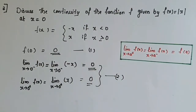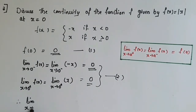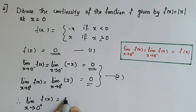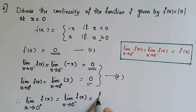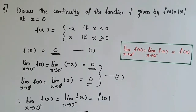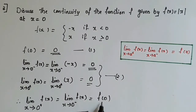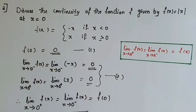Since conditions 1 and 2 are equal, we can write: limit x tends to 0-plus of f of x equals limit x tends to 0-minus of f of x, and both equal f of 0. Therefore, the right-hand limit, left-hand limit, and the value of the function are all equal. Hence, f is a continuous function at x equal to 0.